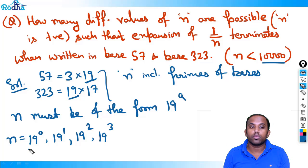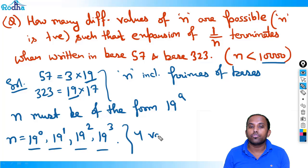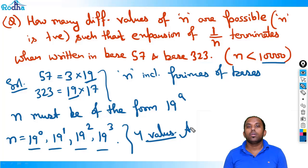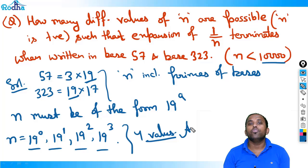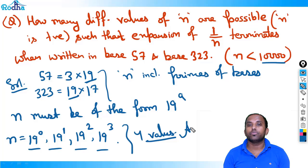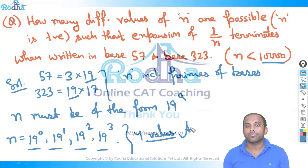So 4 values: 1, 2, 3, 4 — that is, n = 1, 19, 361, 6859. Four values are the answer. I hope this concept is clear. We will continue with base system in the next video. Thank you.